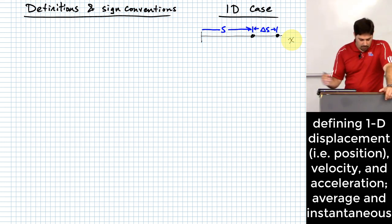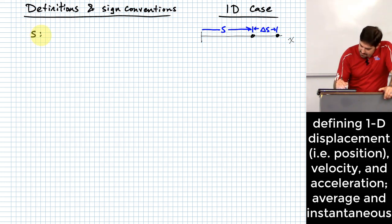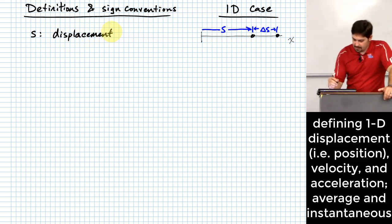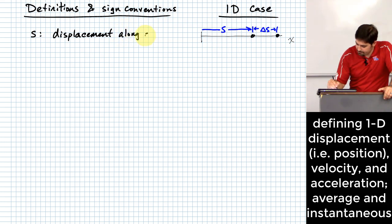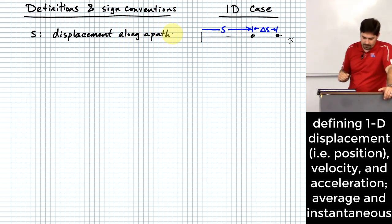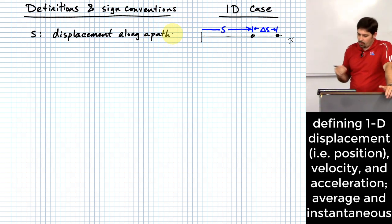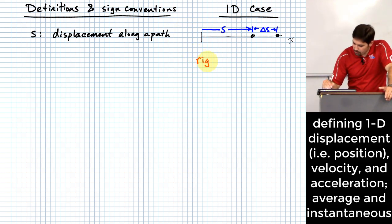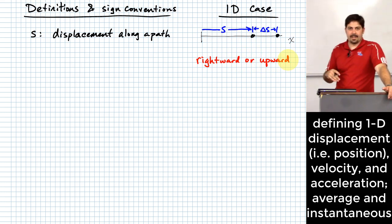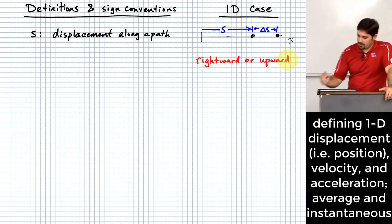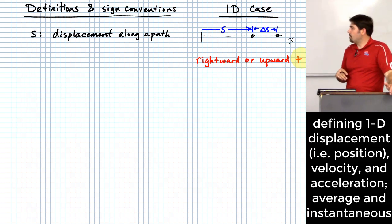So when we look at this s, it is displacement along a path. And right at the very beginning: anytime we are talking about rightward or upward, unless we make special effort to define it differently, we're going to assume that rightward and upward are positive. That's a sign convention we will typically use with our problems.